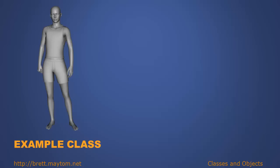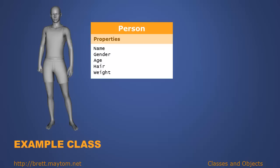Let's look at an example of a class — a person. The term person doesn't refer to anyone in particular, but we all understand what a person is and we can describe one. In object-oriented terms, we create a class defining a person. That person has certain characteristics: a name, a gender, an age, a hair color, and a weight. I'm sure you can think of many more.